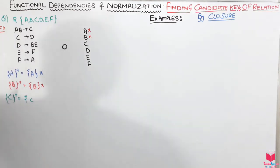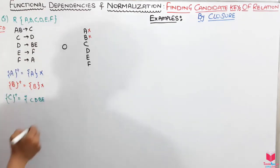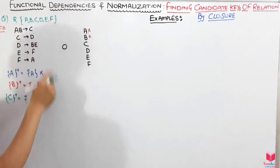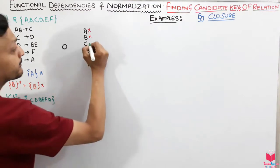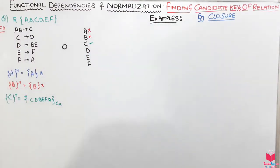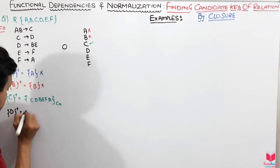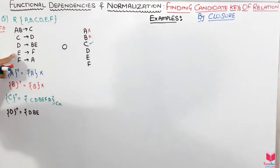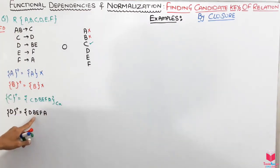Now let's find the closure of C. C+ gives at least {C}. From C→D, I get D. From D→BE, I get B and E. From E→F, I get F. From F→A, I get A. All six attributes are here, so C is a candidate key.